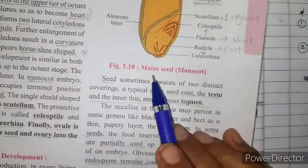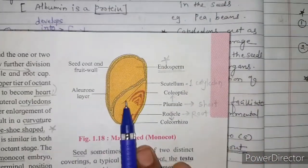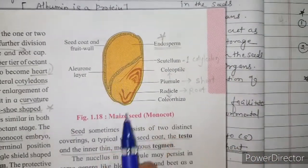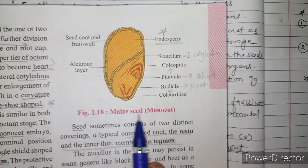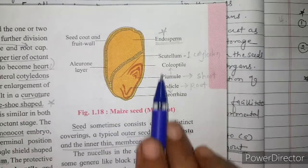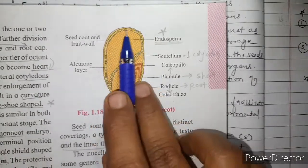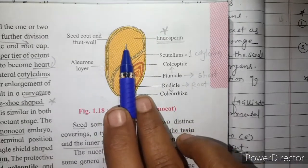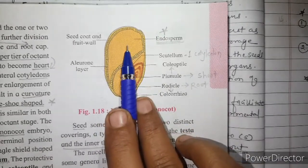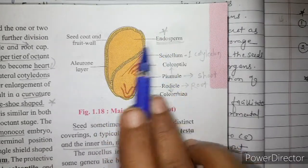This is the monocot seed. Example: maize seed. The maize seed is an endospermic seed — endosperm is present in it.